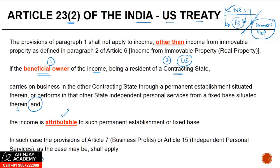This applies where the income is attributable to such PE or fixed base — the concept of attribution has been discussed in detail under Articles 12 and 3. If a non-resident has a PE in India, derives other income taxable under Article 23(1), is the beneficial owner and a resident of the US, and the income is attributable to the PE, then the provisions of Article 7 (business profits) or Article 15 (fixed base for independent personal services) shall apply.